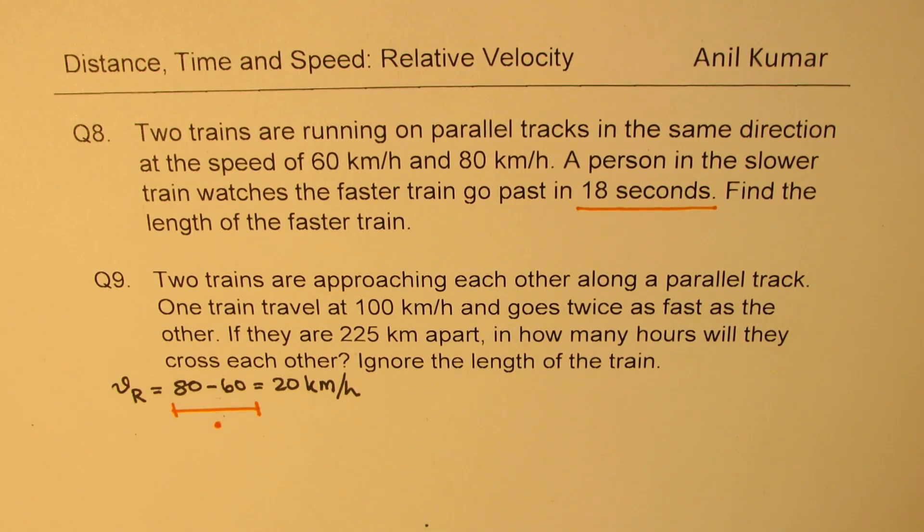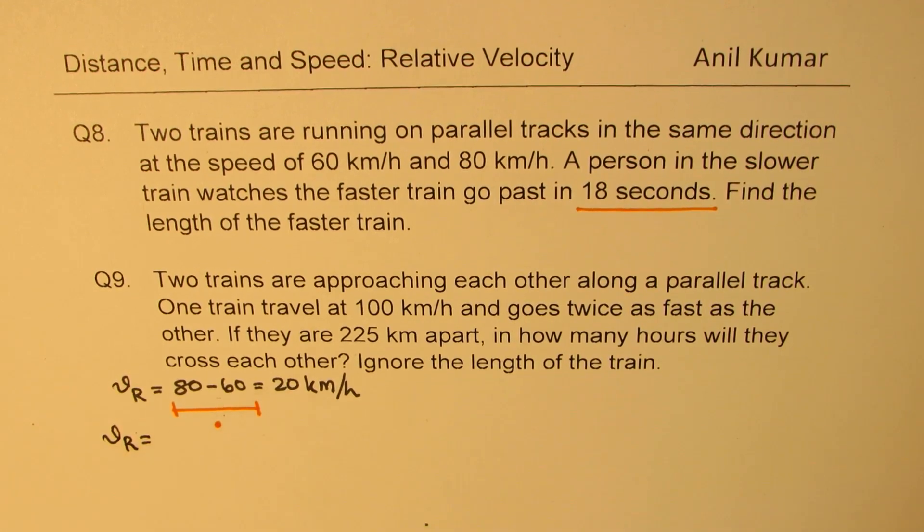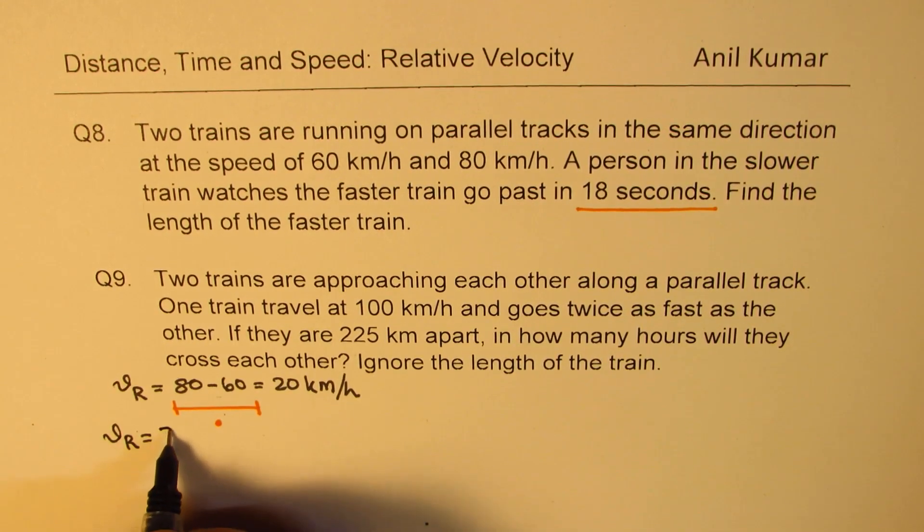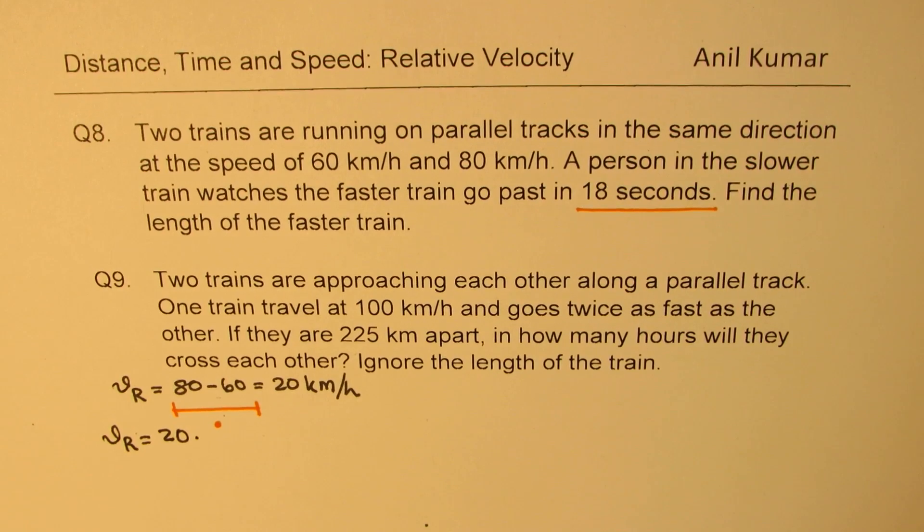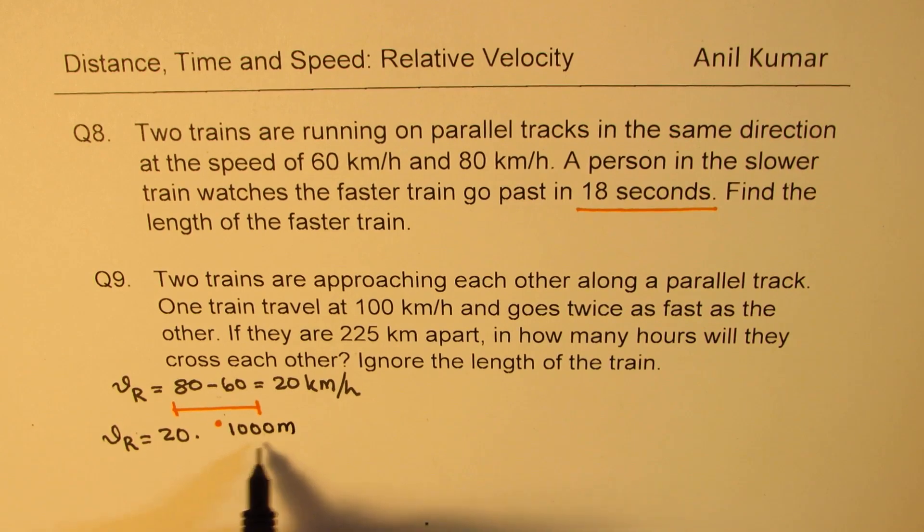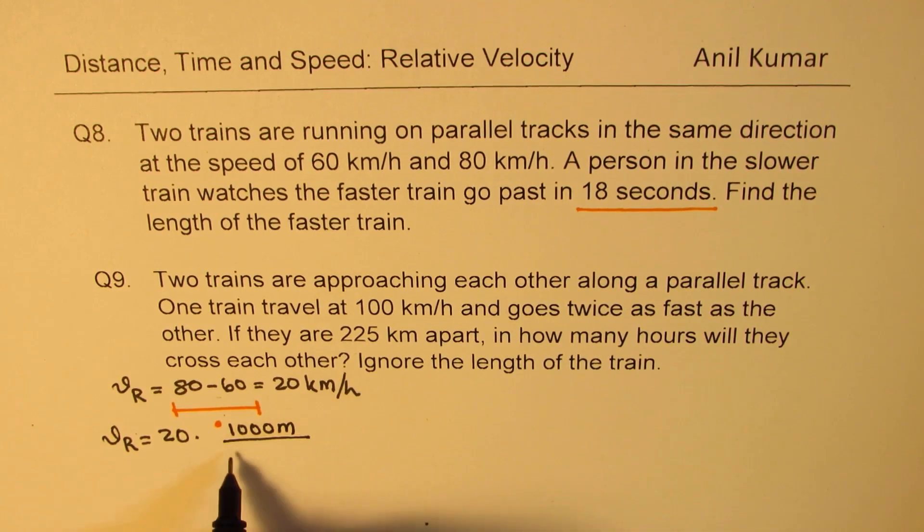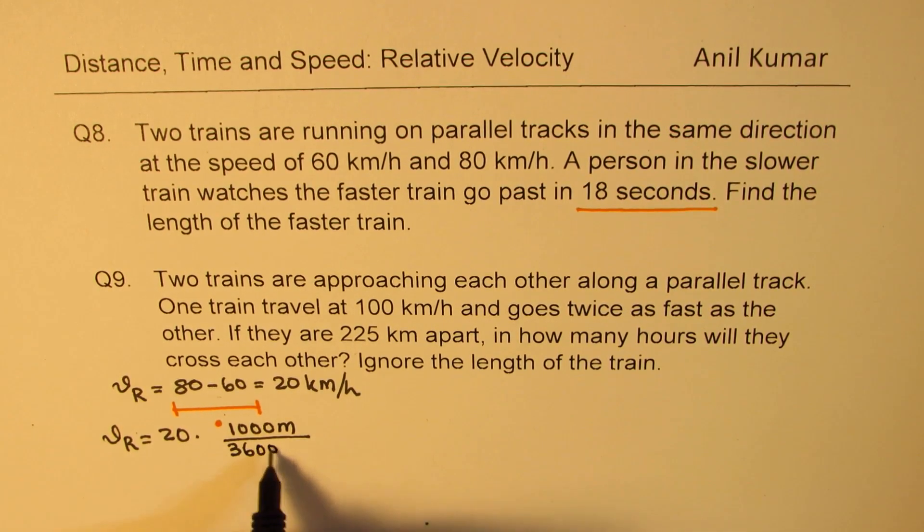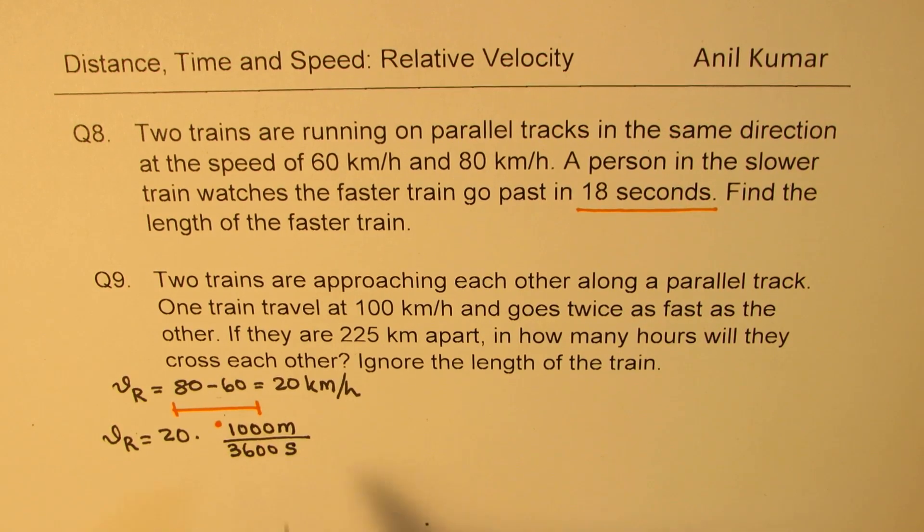We need to convert this velocity into meters per second. So we have 20, and the factor which is to be multiplied is 5 over 18. How do we get that? Kilometers have 1,000 meters, and one hour is 3,600 seconds. So you get meters per second.